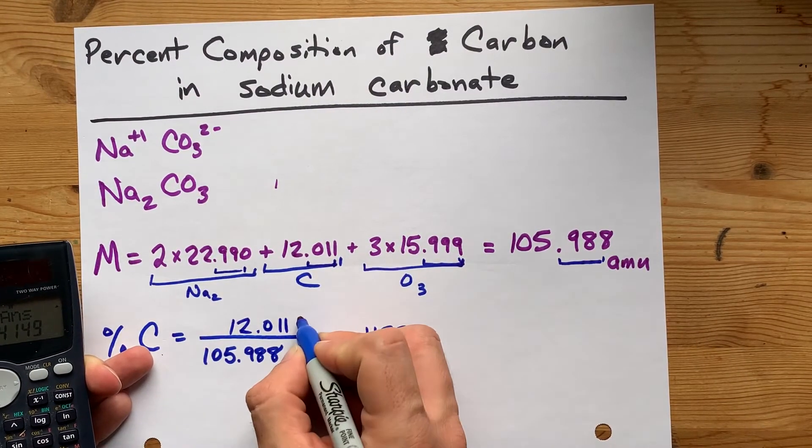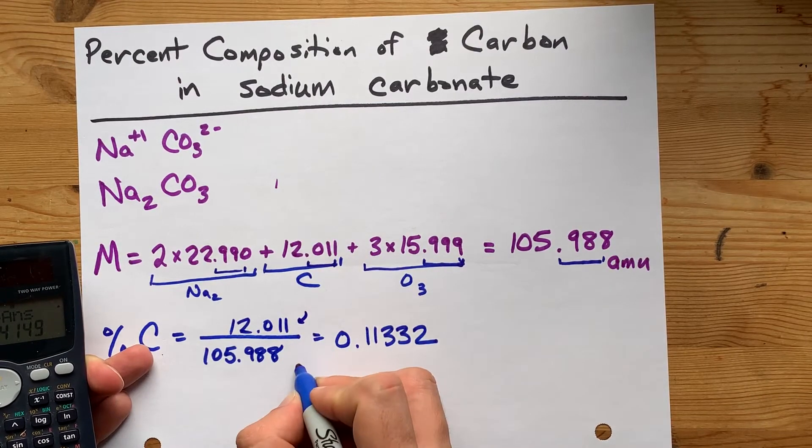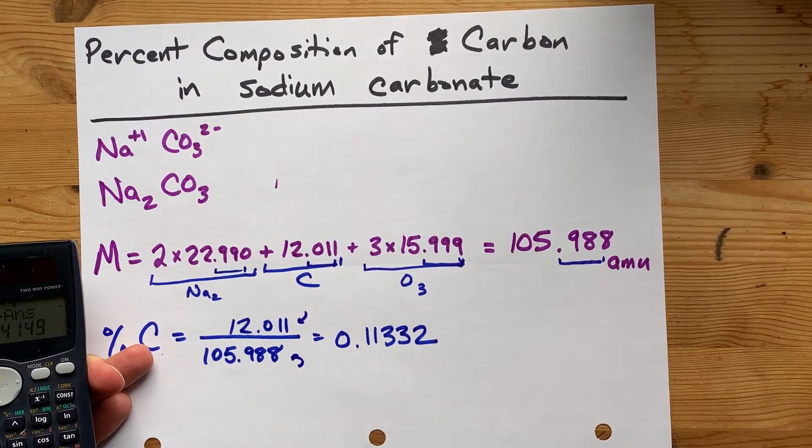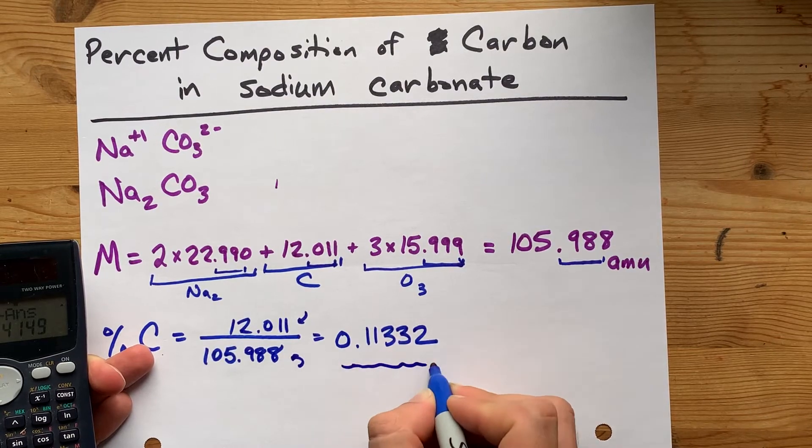And then, when I do this division, this has five significant figures and six significant figures, which means I need five significant figures in my answer. I always use the least amount of sig figs when I do division.